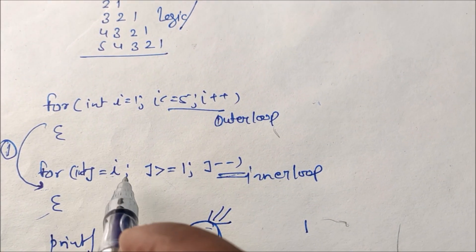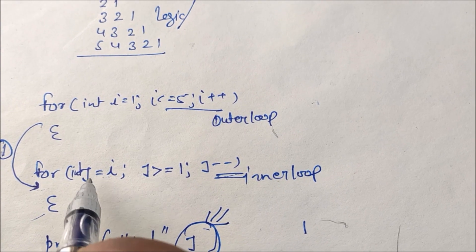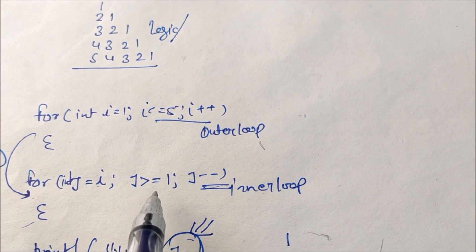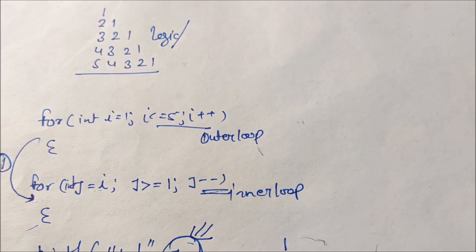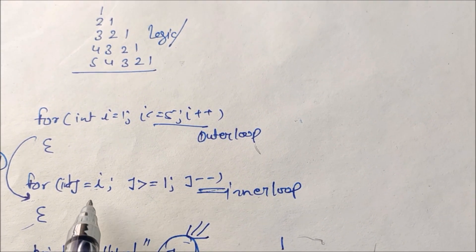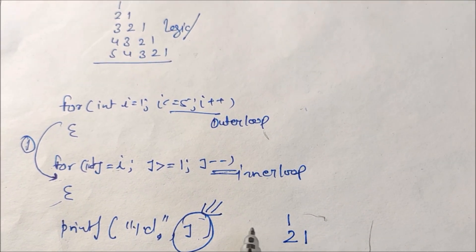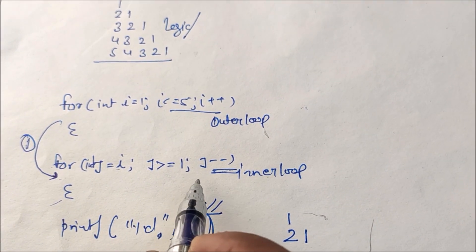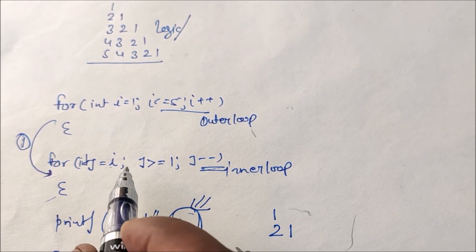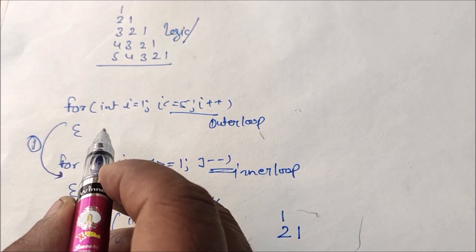Now i increments to 2. We enter the inner loop, j = 2. The condition 2 >= 1 is true, so we print 2. Then j-- makes j = 1, condition is still true, so we print 1. Then j-- makes j = 0, condition is false, and we exit the inner loop.